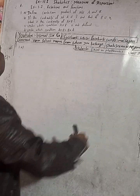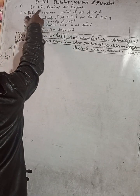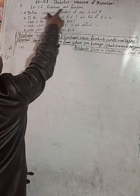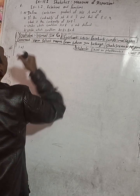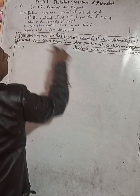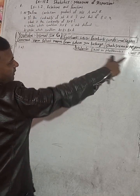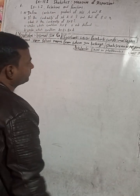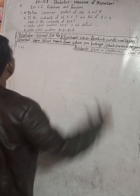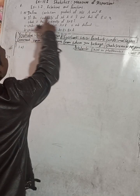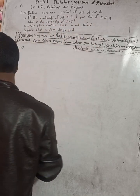Here, this is question number 1, exercise 1.2, Relations and Functions. Vedant Excel in optional mathematics class 9. The question is: define the Cartesian product of sets A and B.